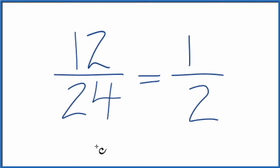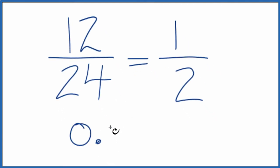If you divide 12 by 24, you get 0.5. If you divide 1 by 2, you also get 0.5.